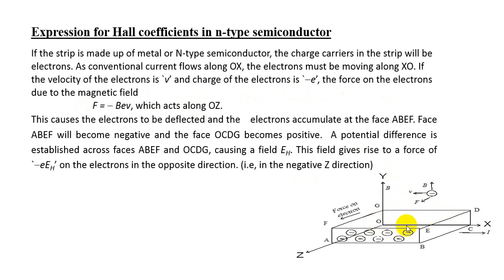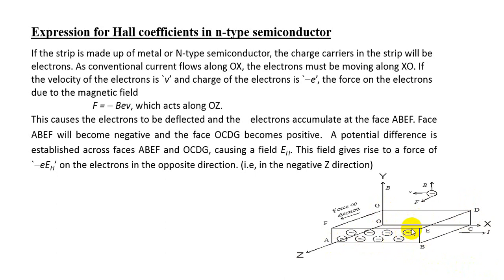The electrons present here experience a force because of the applied magnetic field, and that causes the electrons to accumulate on face A, B, E, F, which becomes completely negative. Because of this negative charge here, positive charge is developed on face O, C, D, G. So A, B, E, F becomes negative due to the force experienced by the electrons, and O, C, D, G becomes positive. A potential is developed between these two faces, and that potential is called the Hall voltage.